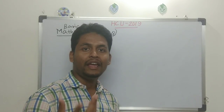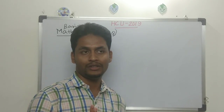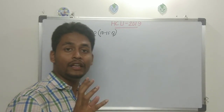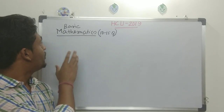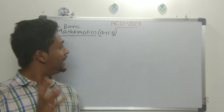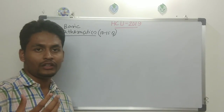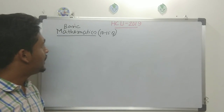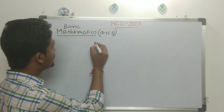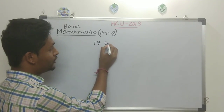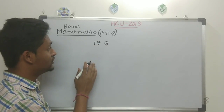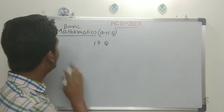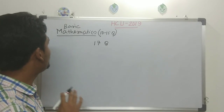In JAM, basic mathematics has only one or two questions, but in HCU there is a very high number of questions coming from basic mathematics — like 10 to 15 questions. If you look at the 2018 question paper, there are almost 17 questions from basic mathematics. You can't neglect this topic.